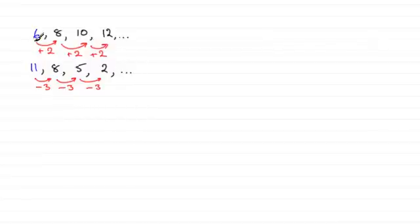Now when we get sequences like this, or this one here, where we're going up in equal steps, or going down in equal steps, then these types of sequences are called arithmetic progressions, or APs for short. Or you could call them an arithmetic sequence.